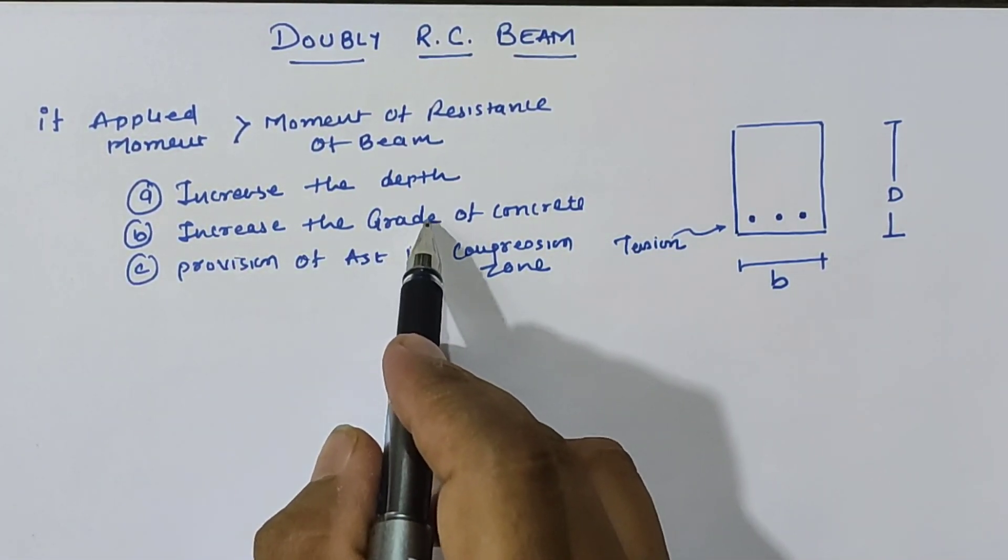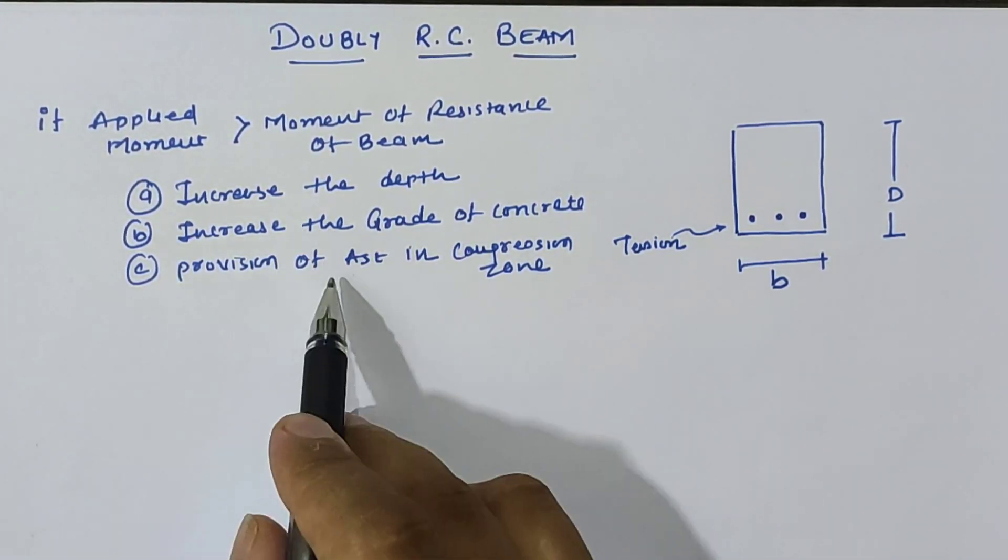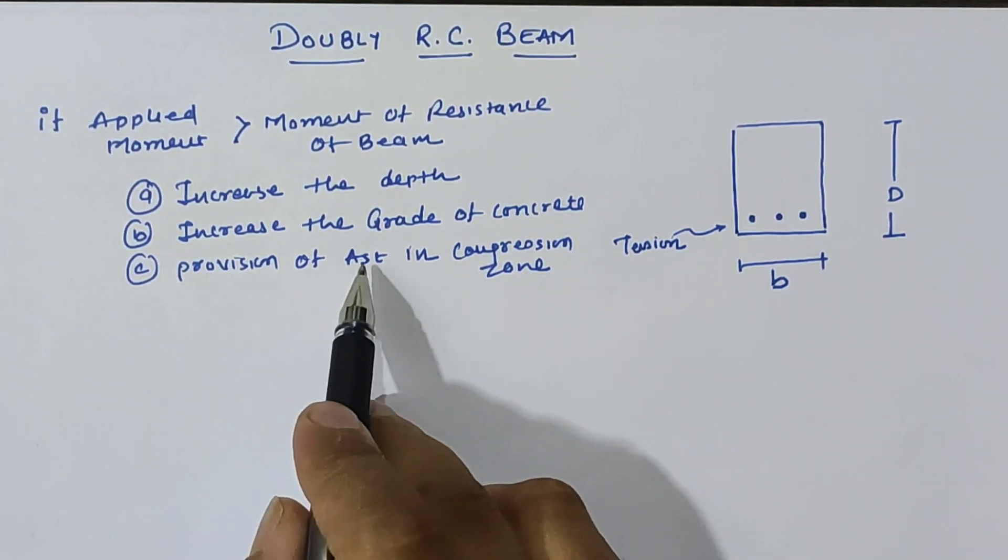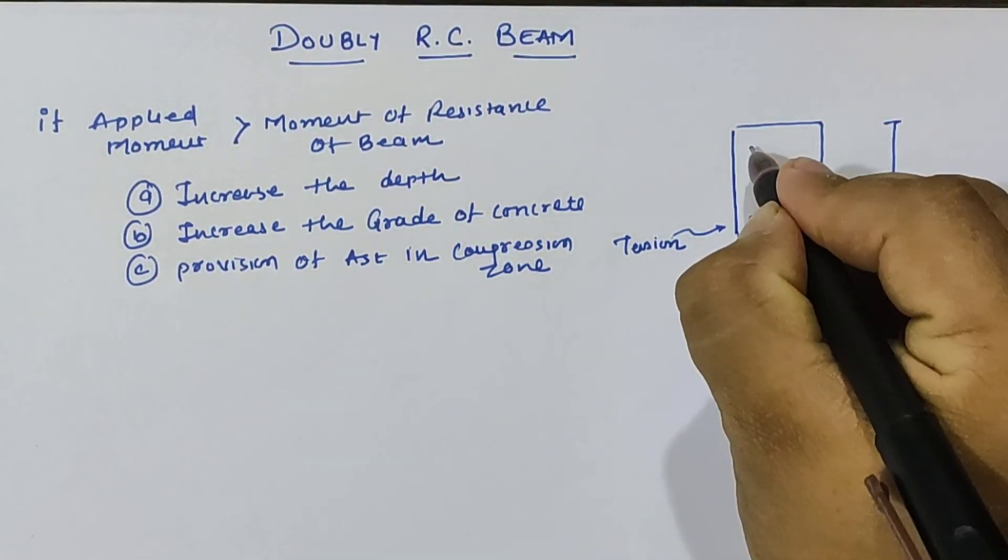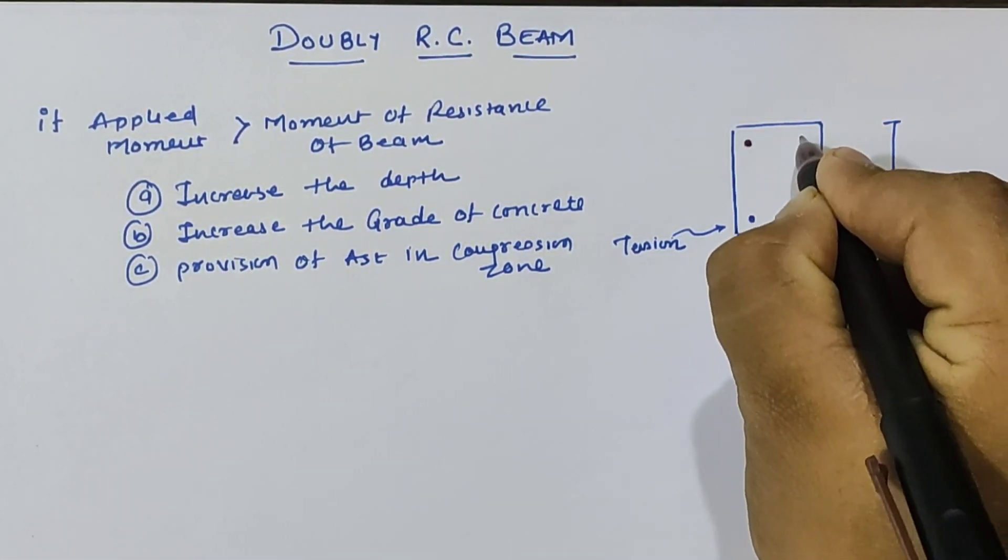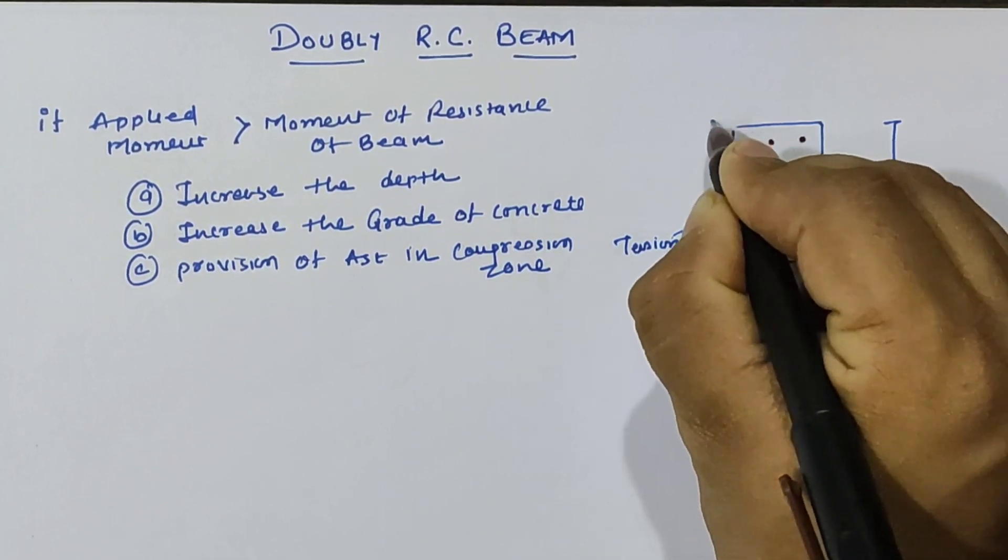If we increase the depth of the beam, it is not perfect for the architectural view. If we increase the grade of concrete, then the cost of the beam is increased. If we provide area of steel in the compression zone, we have to provide reinforcement in the compression zone.